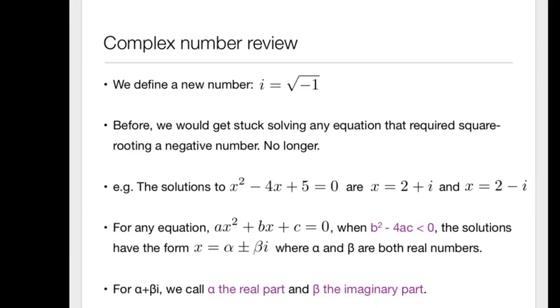So we call alpha the real part. It's a real number, and we call it the real part. And we call beta, which is also a real number, the imaginary part, because it's being multiplied by i.